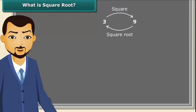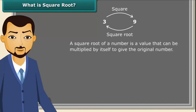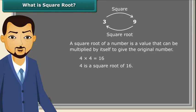Square root is an inverse operation of squaring. It is a value that can be multiplied by itself to give the original number. So, when 4 is multiplied by 4 we get 16, which means 4 is the square root of 16. A square root is represented by a special symbol called the radical. For example, the square root of 25 is 5.